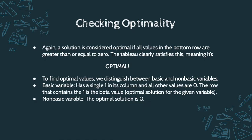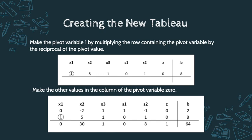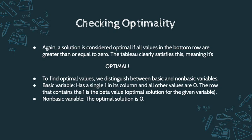Now we can check for optimality again. Looking at the bottom row, we have 0, 31, 0, 8, 1, 64. All of these are greater than or equal to zero, which means we have found the optimal value. Checking for optimality has been a successful endeavor.